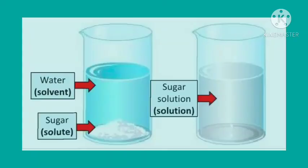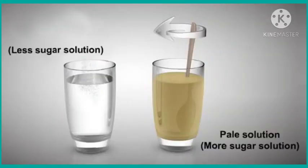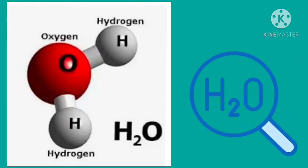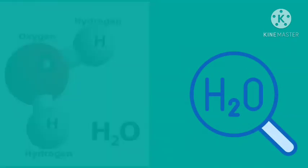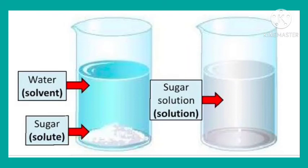For example, in a sugar water solution, if you add either a small or large amount of sugar, in both cases you get a mixture of sugar solution. Next, every compound has its own chemical formula. For example, the chemical formula of water is H2O. Whereas a mixture has no chemical formula — sugar solution is a mixture and it has no chemical formula.